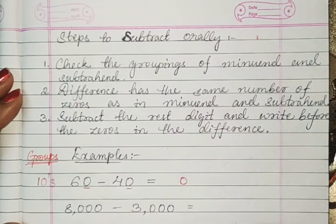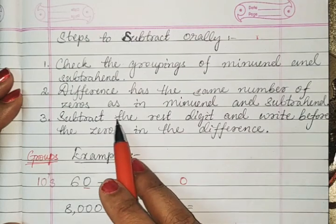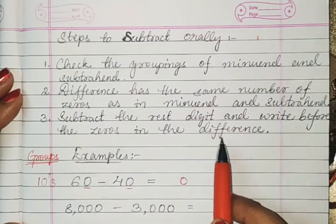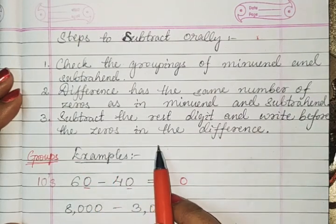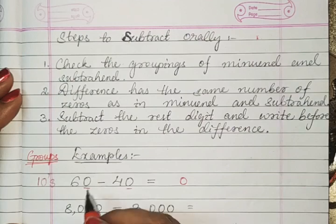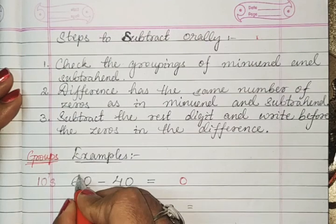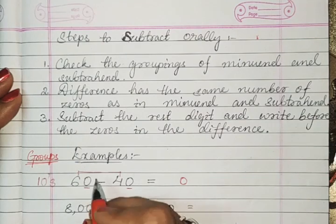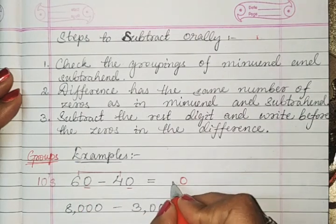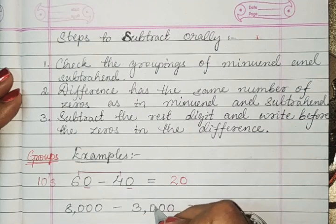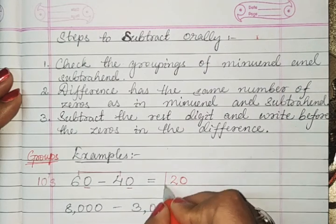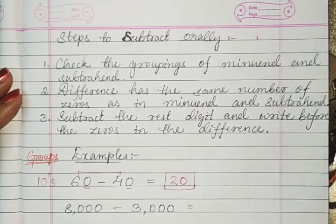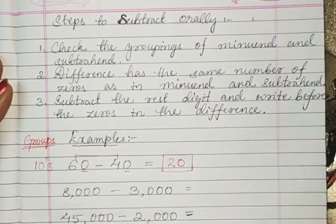The third step is: subtract the rest digit and write it before the zeros in the difference. So you subtract six minus four, which is two, and write it before the zero. The difference is 20. Now you understand the steps — let's solve two more examples.